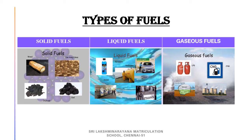They are solid fuels, liquid fuels and gaseous fuels. The first one is solid fuels. The fuels that exist in solid form are called solid fuels. Some examples of solid fuels are wood, cow dung cakes, charcoal and coal. These solid fuels are used in industries and also used in railway engines.